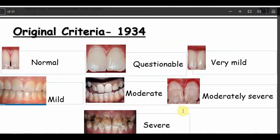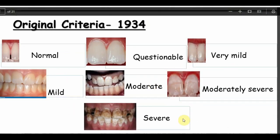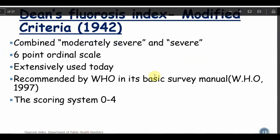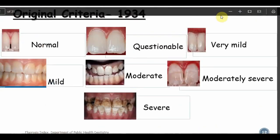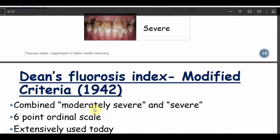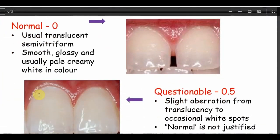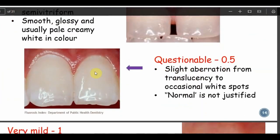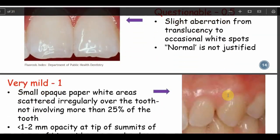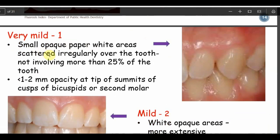The original 1934 criteria had seven categories: Normal, Questionable, Very Mild, Mild, Moderate, Moderately Severe, and Severe. In the 1942 modification, Moderately Severe and Severe were combined, making it a six-point ordinal scale. The WHO fourth edition (1997 basic survey manual) recommends a scoring system of 0 to 4, where: 0 = Normal — translucent, semi-vitriform, smooth, glossy, pale creamy white enamel; 0.5 = Questionable — slight aberration from translucency, occasional white spots; 1 = Very Mild — small opaque paper-white areas scattered over less than 25% of the tooth surface.